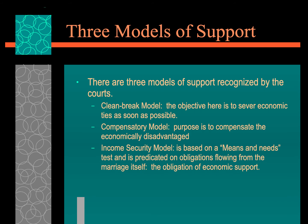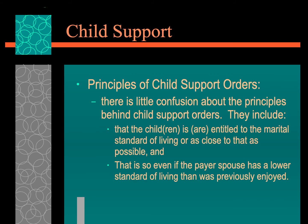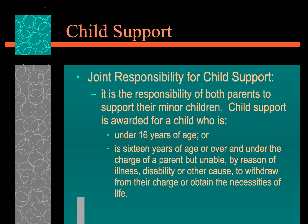The types of support models are the Clean Break Model, the Compensatory Model, or the Income Security Model. The interest of the children in maintaining a stable family home is vitally important. Principles of child support include that children are entitled to a material living standard as close as possible to what they had before. Child support can be awarded to a child under the age of 16, but over the age of 16 it can be changed.